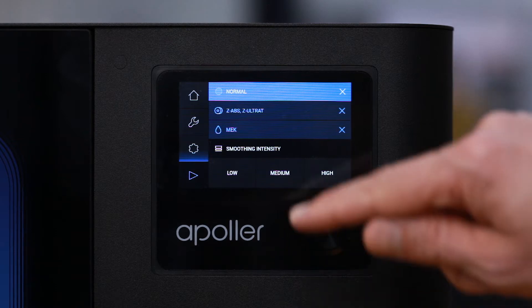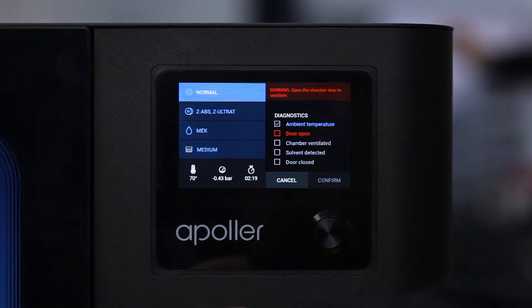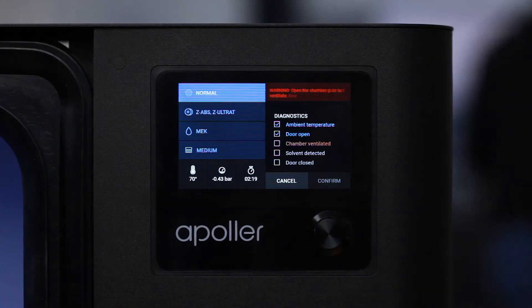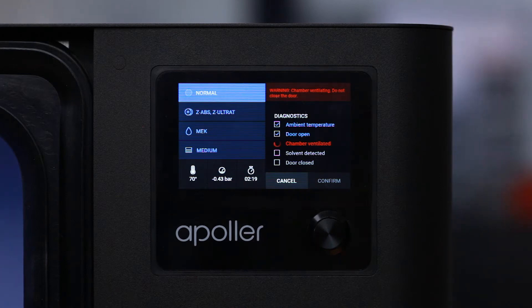Once all settings are chosen, the device starts the diagnostic procedures. Each step is indicated on the list on the right side of the screen. At first, the device has to check the ambient temperature. Then, the user has to ventilate the chamber by opening the chamber door for 60 seconds.